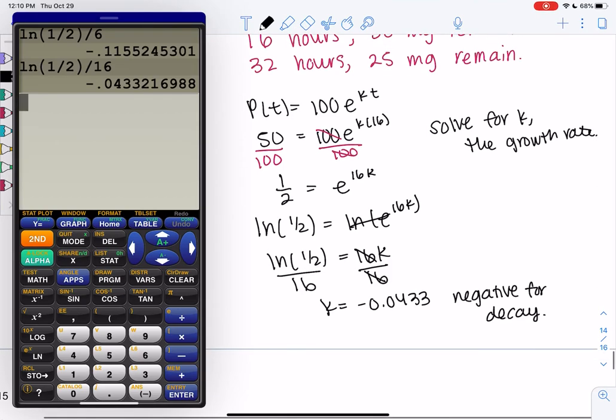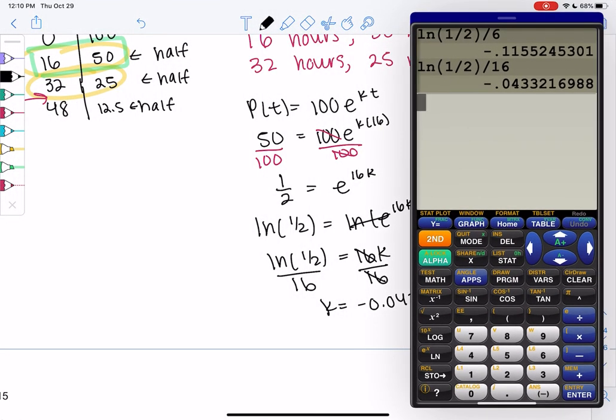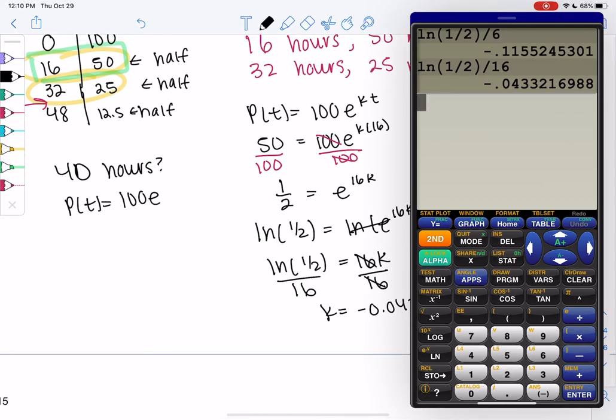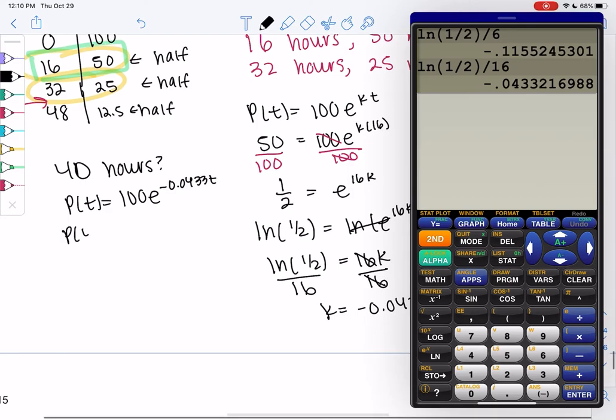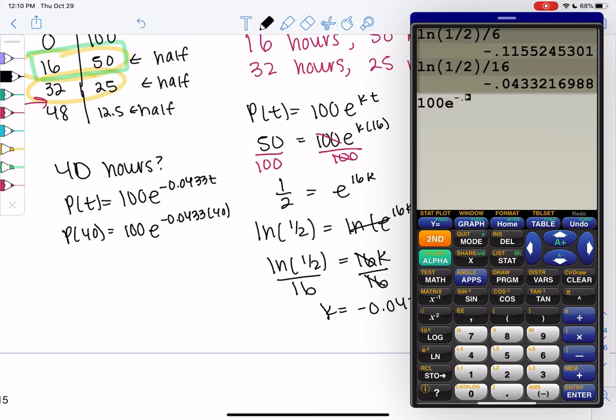And so the final question was, what happens after 40 hours? So since we have time, we'll just plug in 40 hours. So P(t) is 100e to the negative 0.0433t. So we'll find P(40).